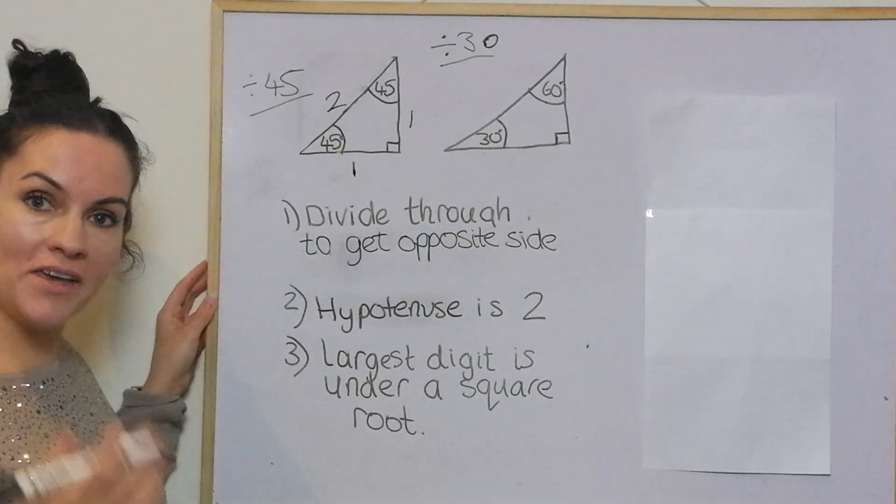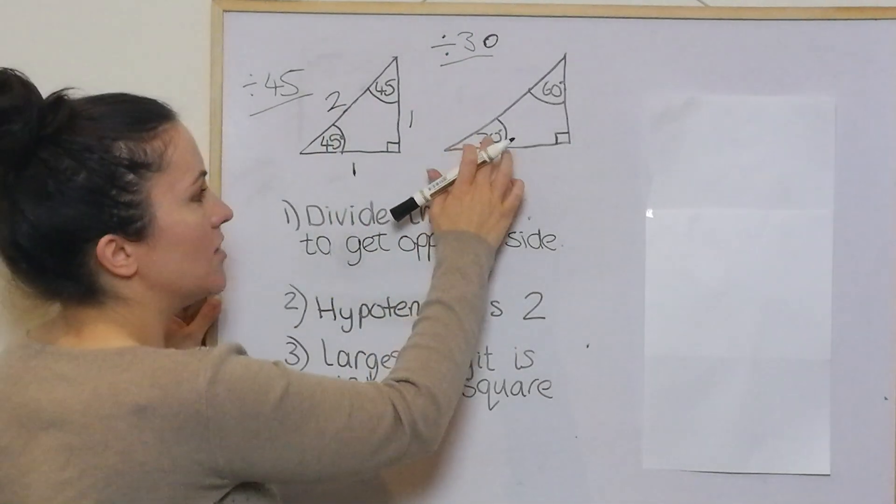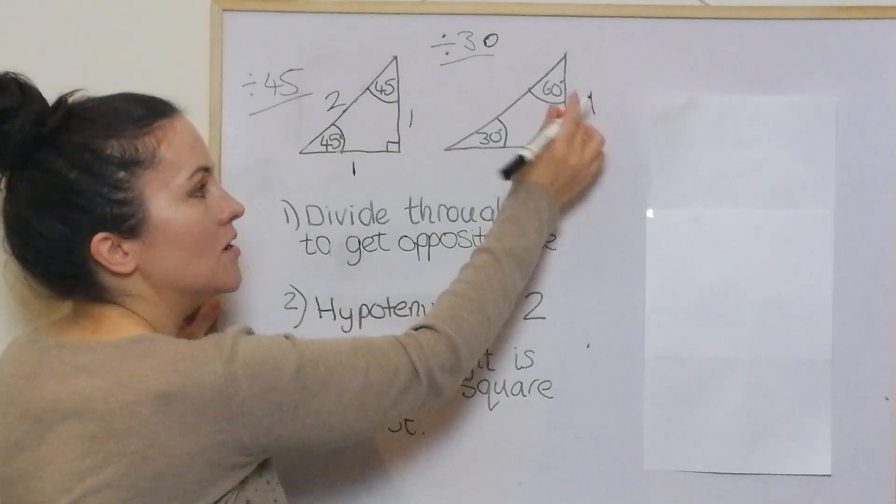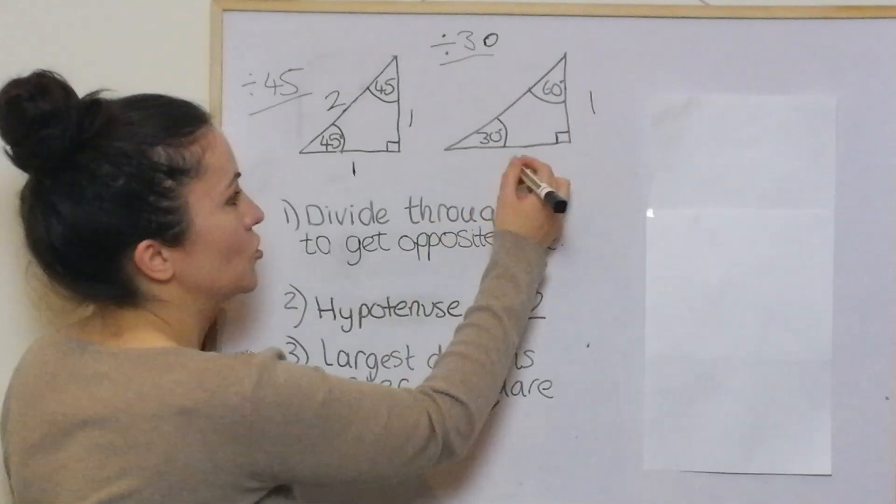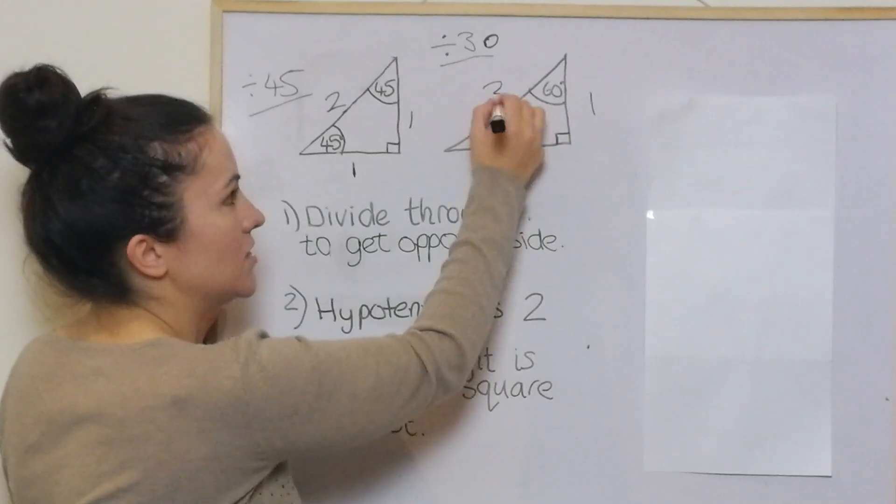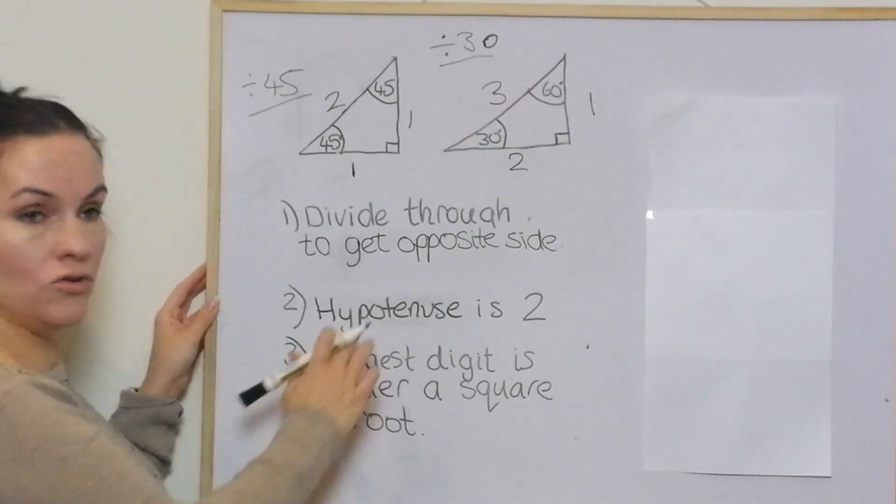In this one, you divide through by 30 to get the opposite side. 30 divided by 30 is 1. 60 divided by 30 is 2. And 90 divided by 30 is 3. The hypotenuse has to be 2.